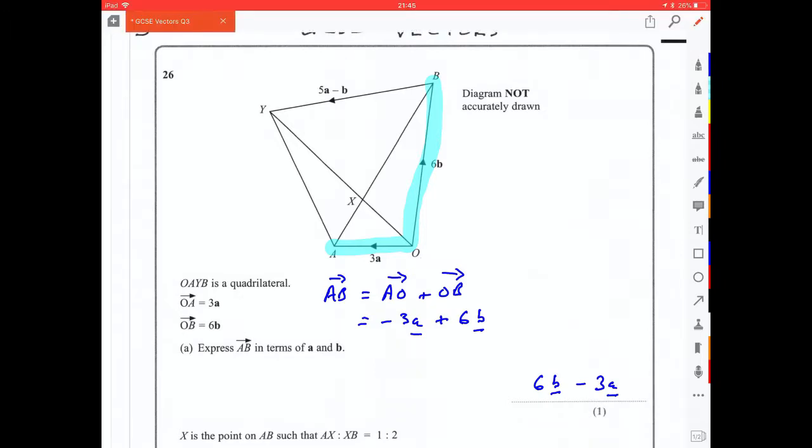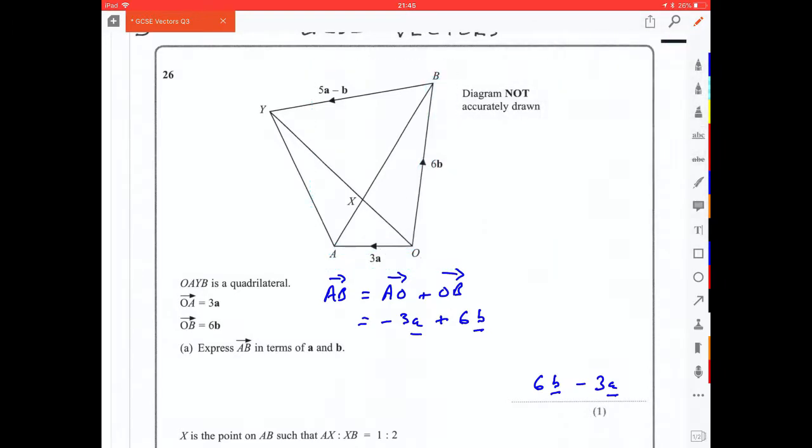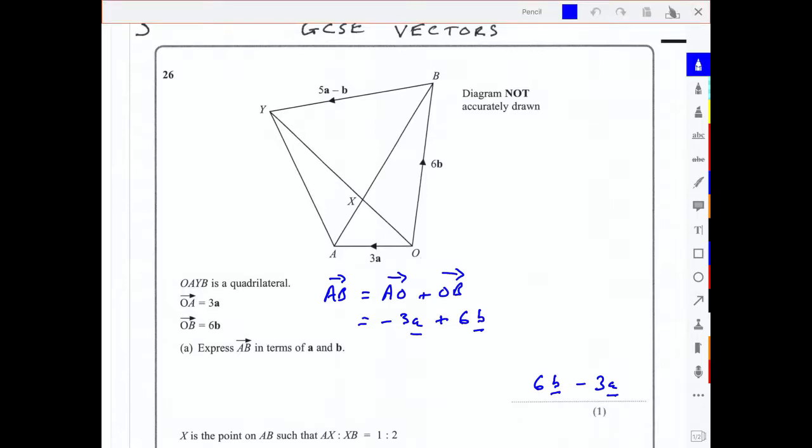We'll now move on to the second part of the question. The second part says X is a point on AB such that AX to XB is 1 to 2.